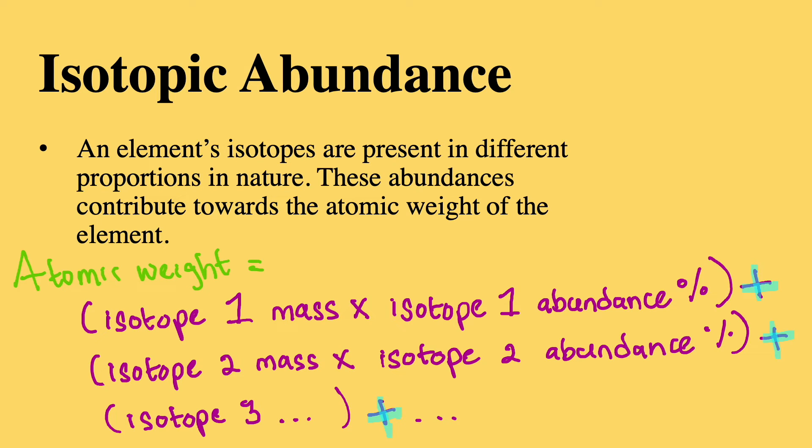Carbon has three isotopes and these isotopes are present in varying abundances in nature. The atomic weight of the element, therefore, is calculated based on the percentage abundance of these isotopes, along with the individual atomic mass of the isotopes. This is depicted further by the formula for atomic weight shown here.